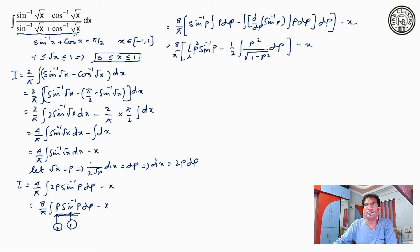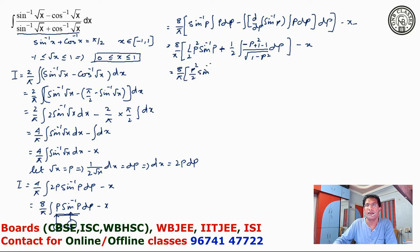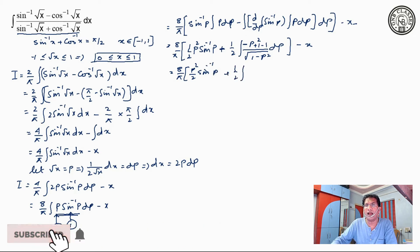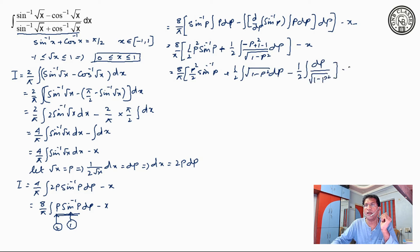Now I will do a little manipulation by taking this minus inside. I put it as plus and then add and subtract 1. So what we have is 8 by pi: p squared by 2 sin inverse p plus half times integral of 1 minus p squared under root divided by under root 1 minus p squared dp, and then minus half integration dp by under root 1 minus p squared.